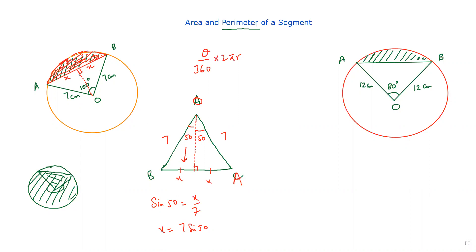If I call this point M, then OM is the line of symmetry and M is the midpoint of AB. Therefore, the perimeter of this shaded segment is going to be 100 over 360 into 2 pi into 7, that is the arc length, plus twice 7 sine 50. So if you calculate this, that will be the perimeter of this shaded part.